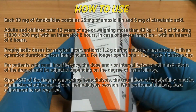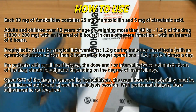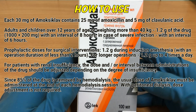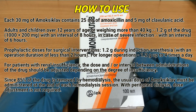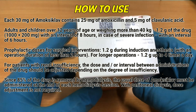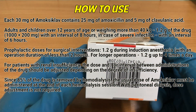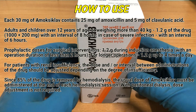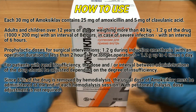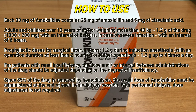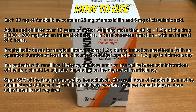Each 30 mg of amoxiclav contains 25 mg of amoxicillin and 5 mg of clavulanic acid. Adults and children over 12 years of age weighing more than 40 kg: 1.2 g of the drug (1000 plus 200 mg) with an interval of 8 hours; in case of severe infection, with an interval of 6 hours. Prophylactic doses for surgical interventions: 1.2 g during induction of anesthesia for operations less than 2 hours; for long operations, 1.2 g up to 4 times a day.